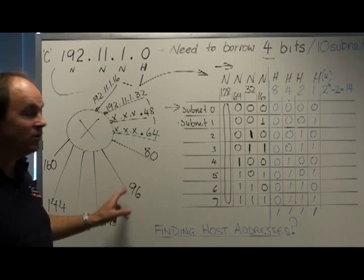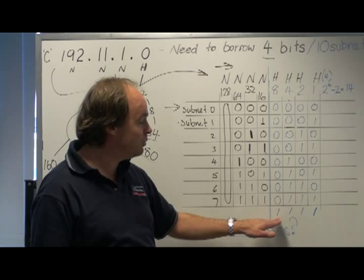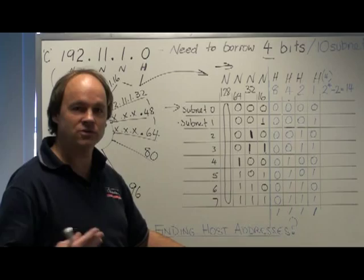At the end of the range there's a broadcast address. The broadcast is similar to the mask, but in this case we put all ones in the host portion. By placing all ones we find the broadcast address. We're not allowed to use that address as an address for a host, a printer, a server and so on.